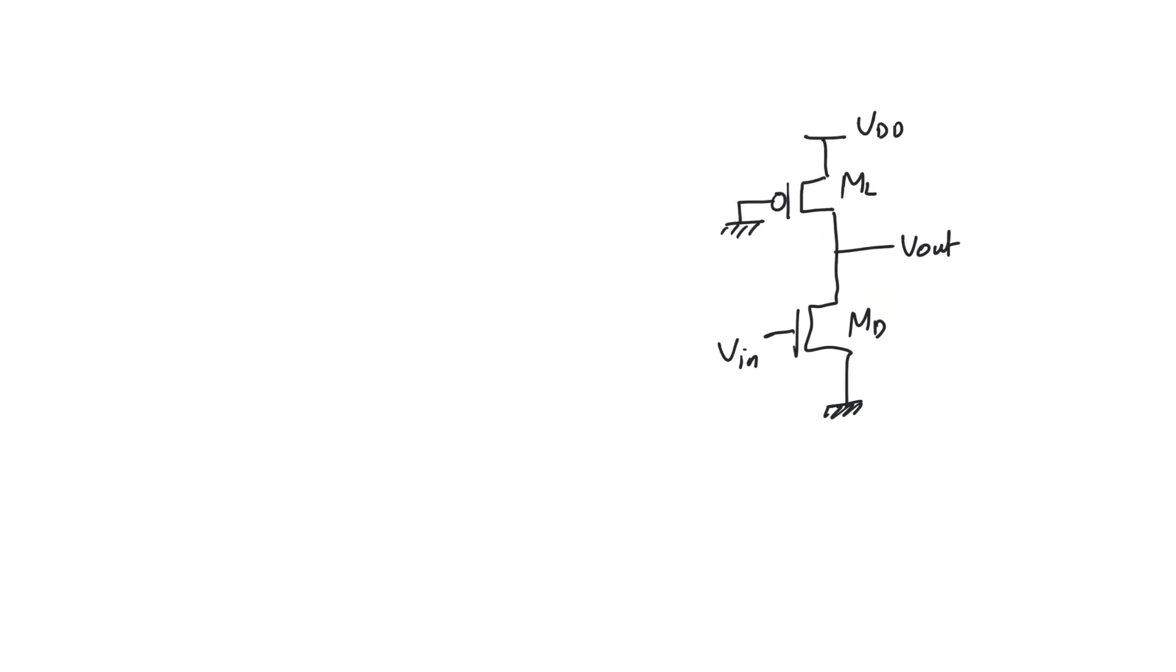So let's look at the pseudo NMOS inverter and figure out V output high and V output low. To find V output high we use V input equals zero volt and we have only one equation we can use which is the KCL equation at the output node. So the load current is equal to the driver current. You only have to figure out the regions of operation. So the driver is definitely going to be cut off in this case.